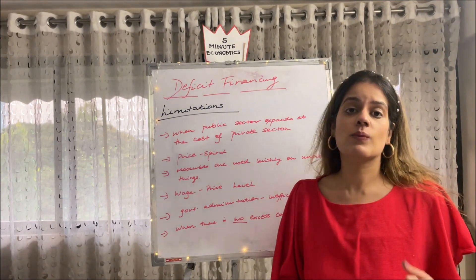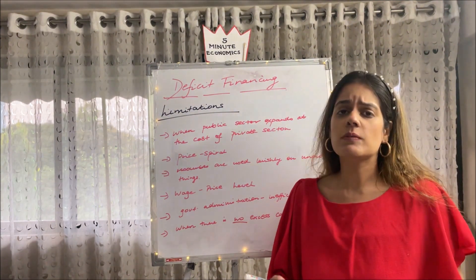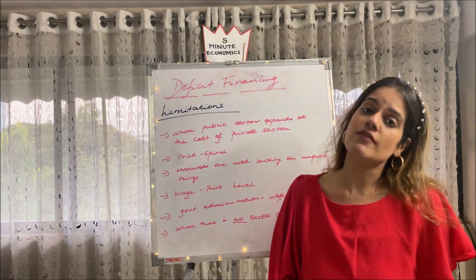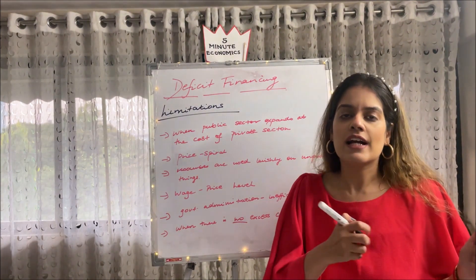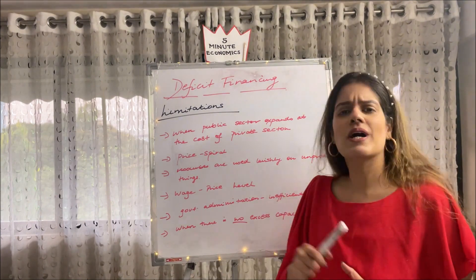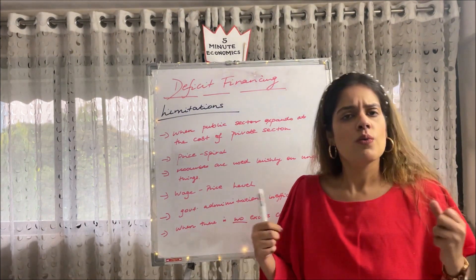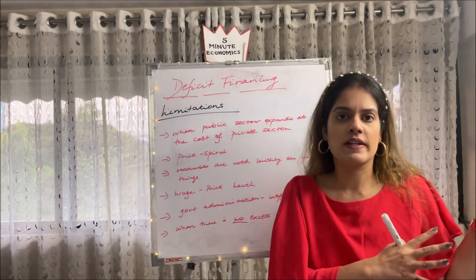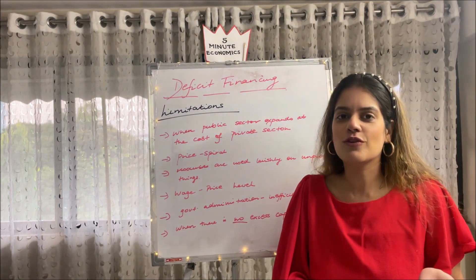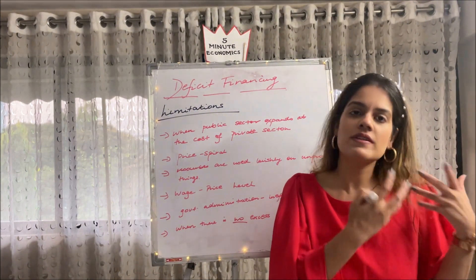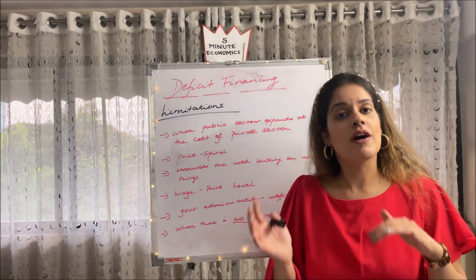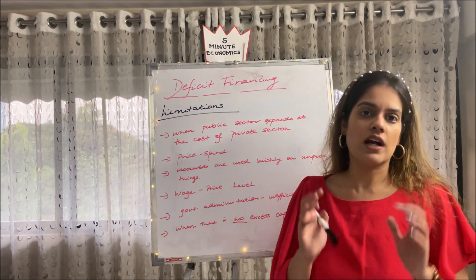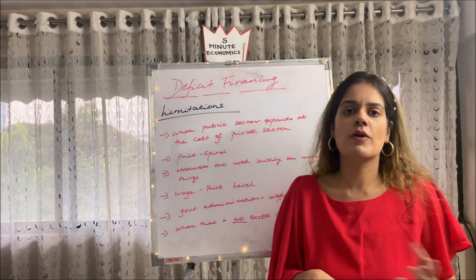Coming to the limitations of deficit financing: first, when the public sector expands at the cost of the private sector, rigid government policies may cause the private sector to suffer more, which actually causes a rise in price. Second is the price spiral — a classic example where government fails to control prices and pumps in more money to finance the shortfall, causing prices to rise again, leading to more money printing — a vicious circle.